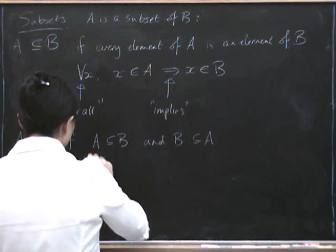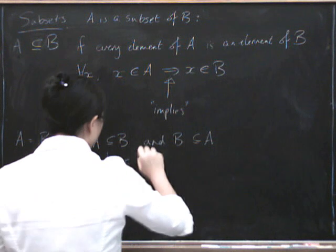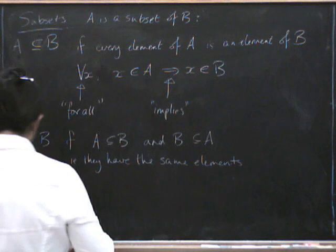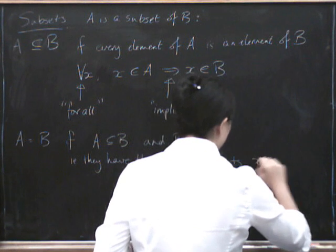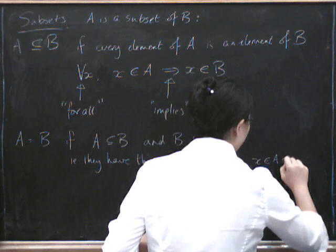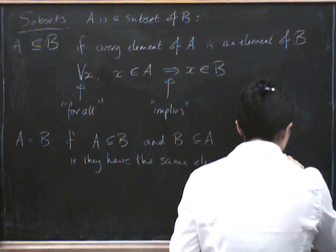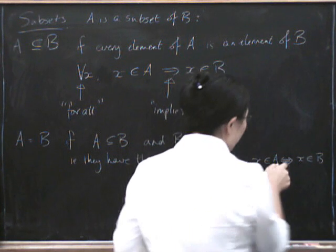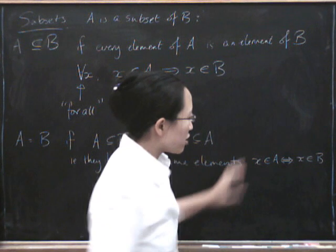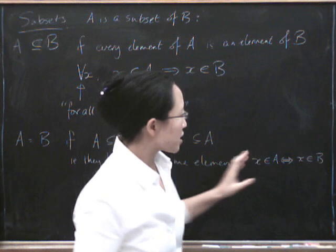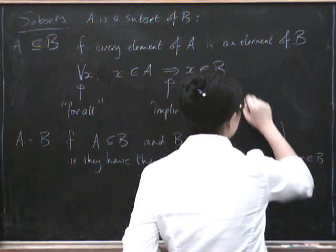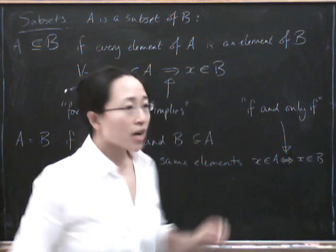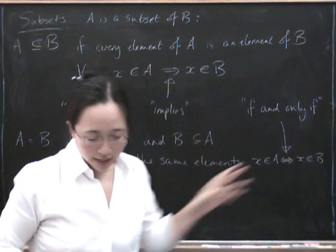i.e., they have the same elements. So, another way of saying that is, x is in A if and only if x is in B. So, this is an implication sign with an arrowhead going in both directions, which means that side implies that side and also that side implies that side. And we sometimes say this out loud as if and only if. I feel an aside about these implication things coming on in a second. But first of all,